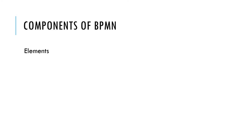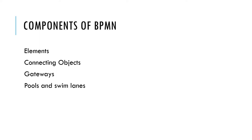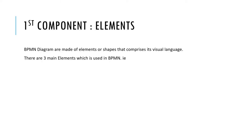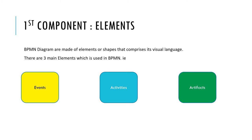To successfully draw a BPMN diagram, it is very important to understand all the components of BPMN. There are four main components: elements, connecting objects, gateways, and pools and swimlanes. Now I will explain each of these components in detail. The first component is called elements. BPMN diagrams are made of elements or shapes that comprise its visual language. There are three main elements used in BPMN: events, activities, and artifacts.